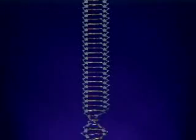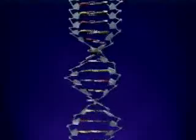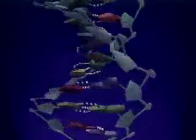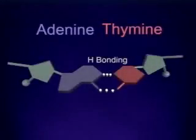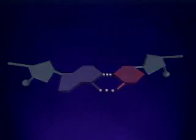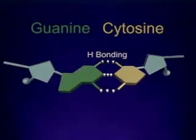There are four different bases, and only certain pairs are possible in forming the rungs. Adenine is always opposite thymine, and guanine is always opposite cytosine.